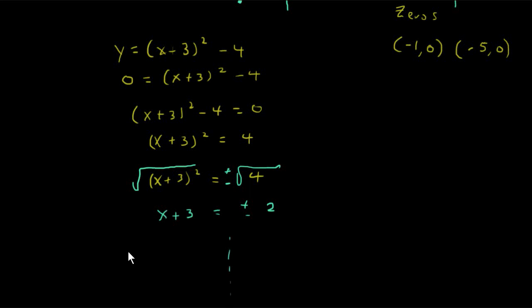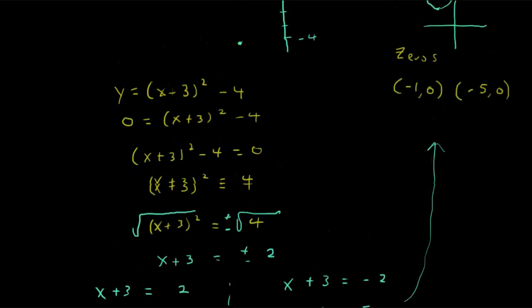Let's break this apart into two parts. One is x plus 3 equals positive 2. And the other is x plus 3 equals negative 2. And solving this side over here, first we get x equals negative 1. And here when we subtract 3 from both sides, we get x equals negative 5. So our two zeros are negative 1, 0, and negative 5, 0.